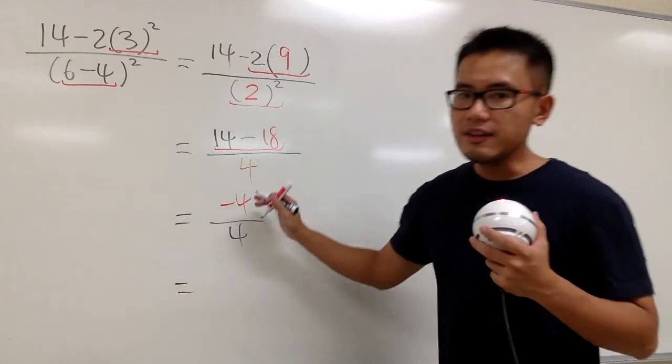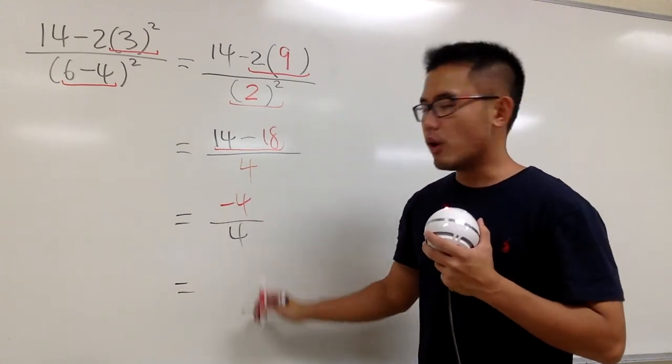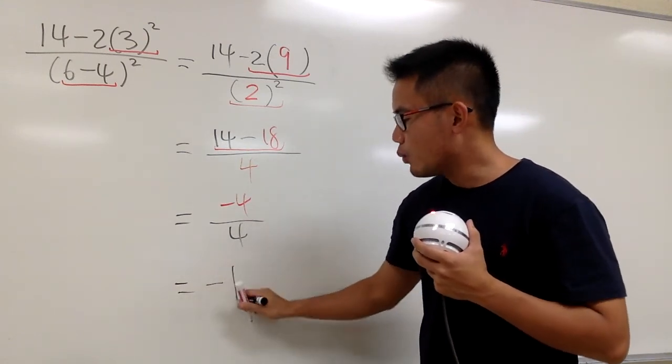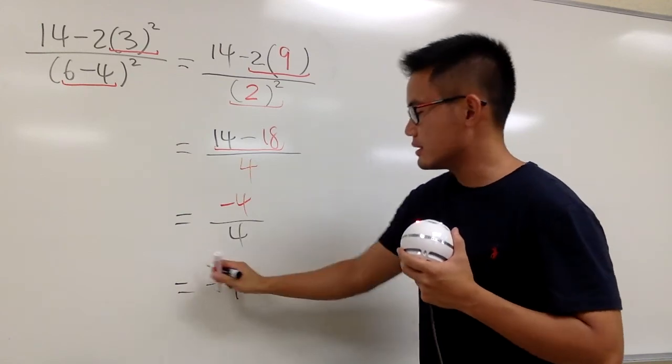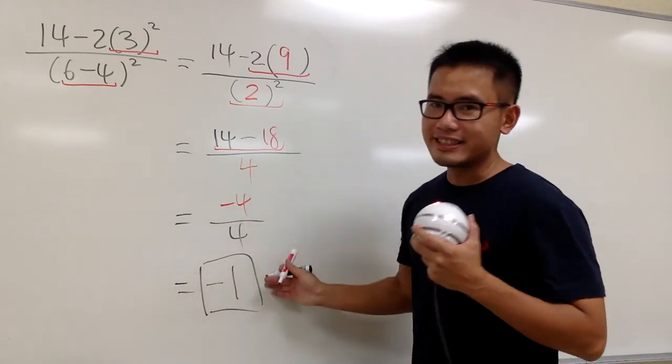At the end, negative 4 over positive 4. We end up with minus 1. A negative 1, like this. And, that's it.